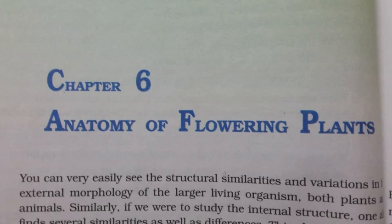6.4.3 Secondary Growth in Roots. In the dicot root, the vascular cambium is completely secondary in origin. It originates from the tissue located just below the phloem bundles, a portion of pericycle tissue above the protoxylem, forming a complete and continuous wavy ring which later becomes circular. Further events are similar to those already described for a dicotyledonous stem. Secondary growth also occurs in stems and roots of gymnosperms. However, secondary growth does not occur in monocotyledonous plants.